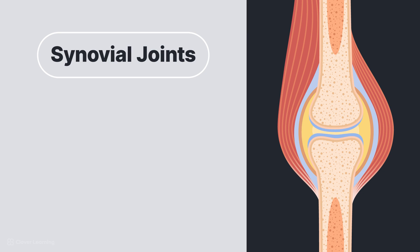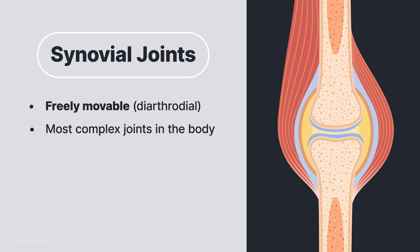Now let's discuss synovial joints. Synovial joints are freely movable, or diarthrodial, and are the most complex joints in the body. These joints are most often found in the upper and lower limbs and are categorized by a fibrous capsule that connects to the periosteum of the two bones and contains a synovial membrane. The synovial membrane surrounds the entire joint to create the joint cavity and produces a thick yellow viscous fluid called synovial fluid. This fluid lubricates the joint space to reduce friction between the bones. The ends of the adjacent bones are covered with articular, or hyaline, cartilage to permit ease of motion.